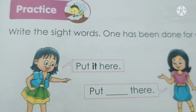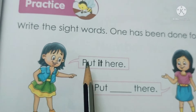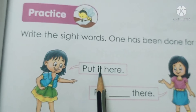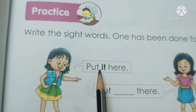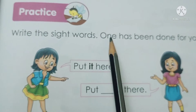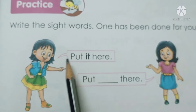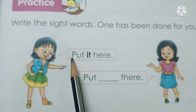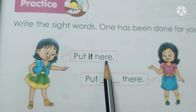Here are some sight words. It — I-T — it. It's a sight word. Write the sight words. One has been done for you. It — put it here.